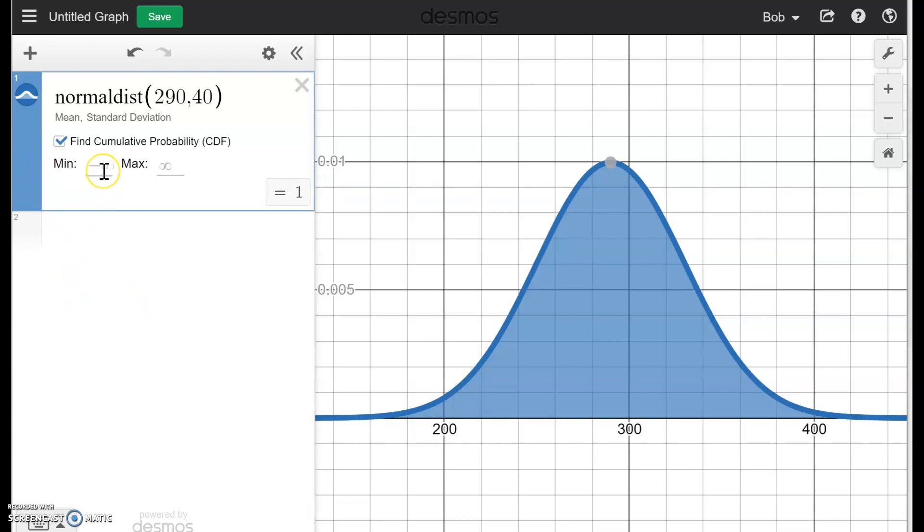Keep in mind, our first problem was find a probability that you go from 330 up to infinity. It defaults to infinity, and that's okay. And we have a probability of 0.1586. That's our proportion here. That's not quite the 16% we got before, but that's okay. 16% is a nice approximation.